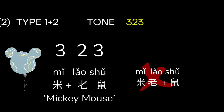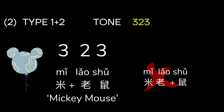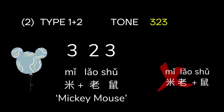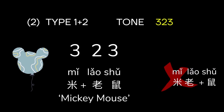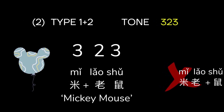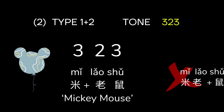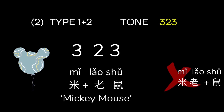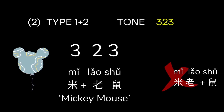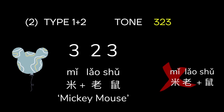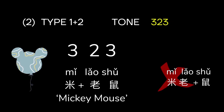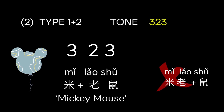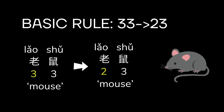The pronunciation of the one-plus-two type is third-second-third. In this case, the last two characters form a word before the first character is combined with them to form the three-character word. For instance, the word 米老鼠 is formed with the first character 米 and the other two characters 老鼠, which means mouse. The combination of the first two characters 米老 is nonsense.